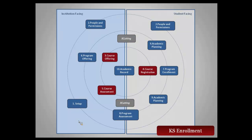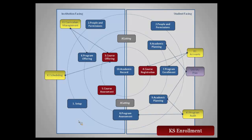We just grouped these together in our ten functional areas, and what you see in red is what we're going to cover today: course offering, course registration, and course assessment. It's important to know how other KS modules intersect with these functional areas. Curriculum management is where the approved courses live, and that dictates what can be offered. Scheduling is obviously a key component — how do you offer courses without sending them to a scheduler, and Kathy will touch on that. On the course registration side, we intersect with KS accounts, and we'll talk a little bit about tuition.